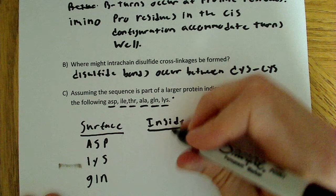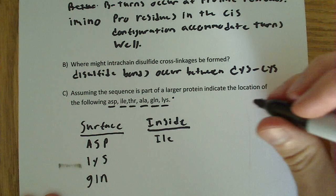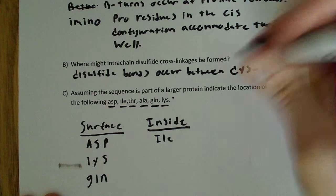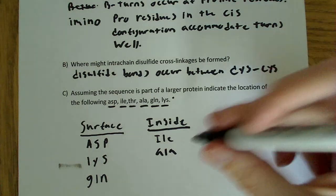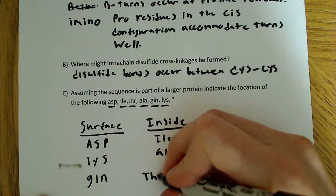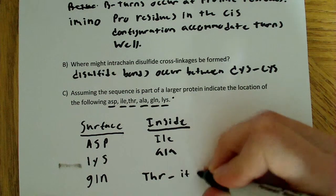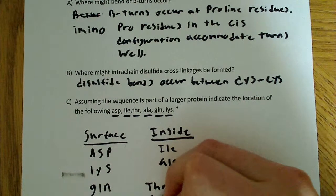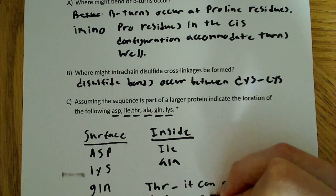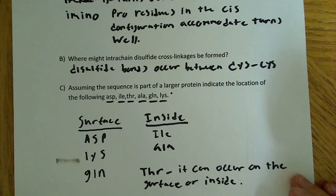And then on the inside, we know we're going to have isoleucine and alanine. Those are the two that would be on the inside. The one interesting one is threonine, which is polar uncharged. So it can occur on the surface or inside.